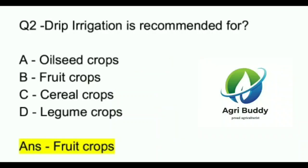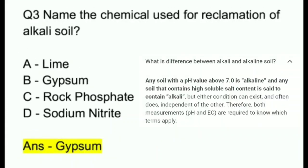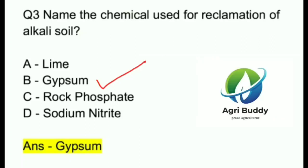Question 3. Name the chemical used for reclamation of alkali soil. A. Lime. B. Gypsum. C. Rock phosphate. D. Sodium nitride. And the answer is Gypsum.